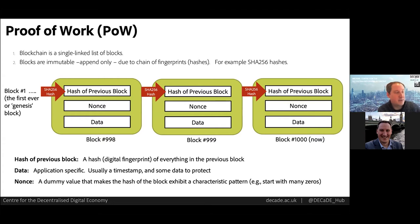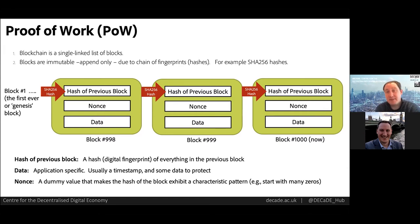It turns out that it's quite difficult to do this, because we have this additional thing inside each block called the nonce, which is just a number — an extra bit of dummy information. We choose this nonce such that the hash, the fingerprint of the block, exhibits a characteristic pattern. It's very hard to choose a nonce such that the hash of the whole block exhibits this pattern. Usually we want the hash to have some number of leading zeros. This is done via exhaustive search of the space of all possible values for that nonce. This computationally expensive work to find that valid nonce — the so-called golden nonce — is called mining.